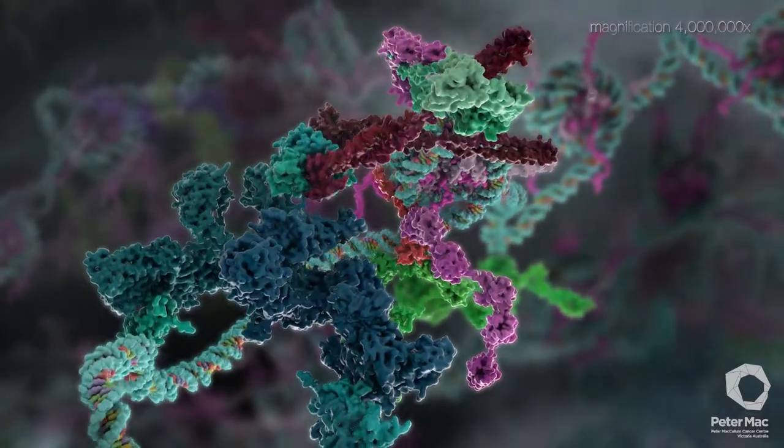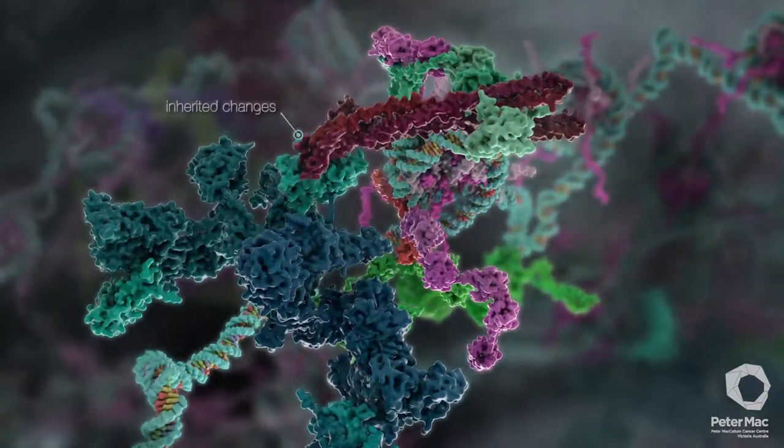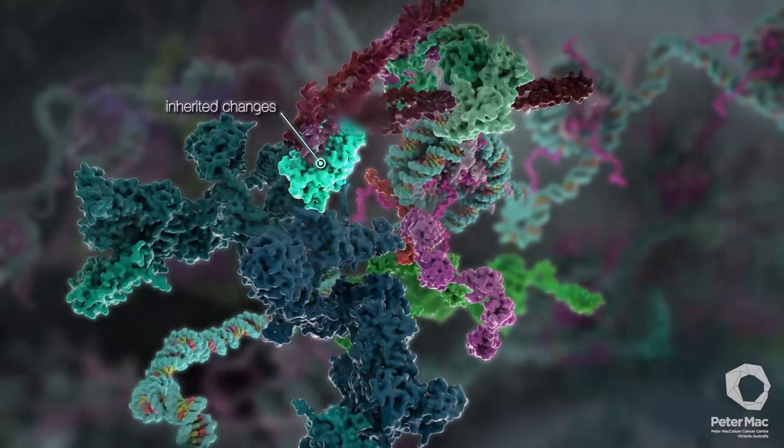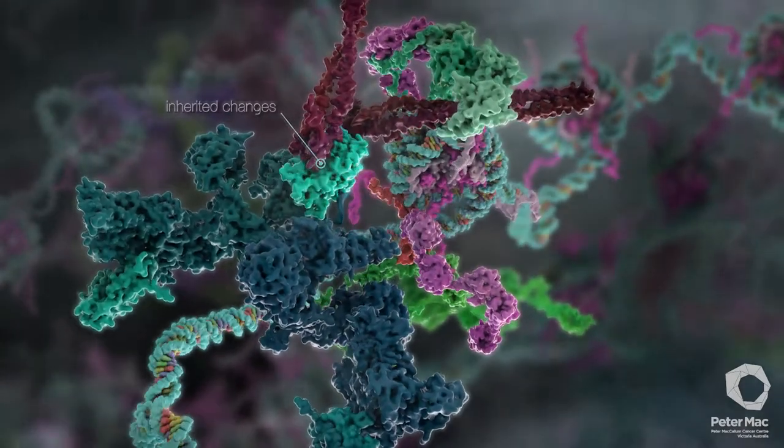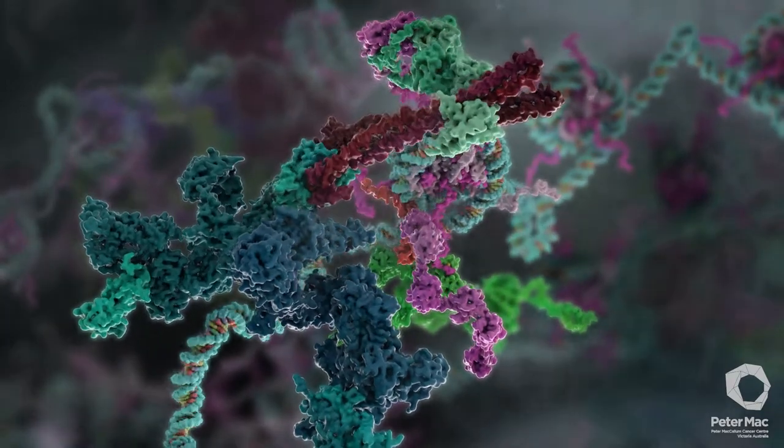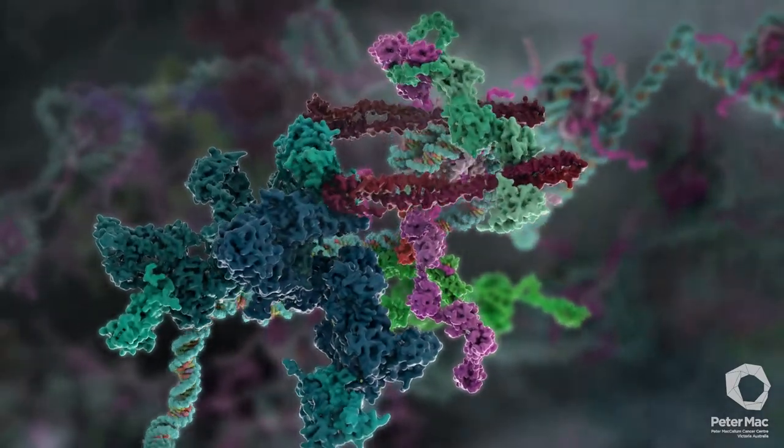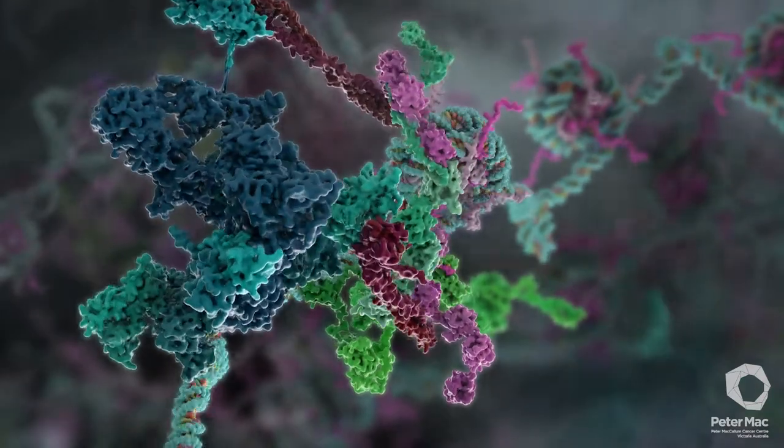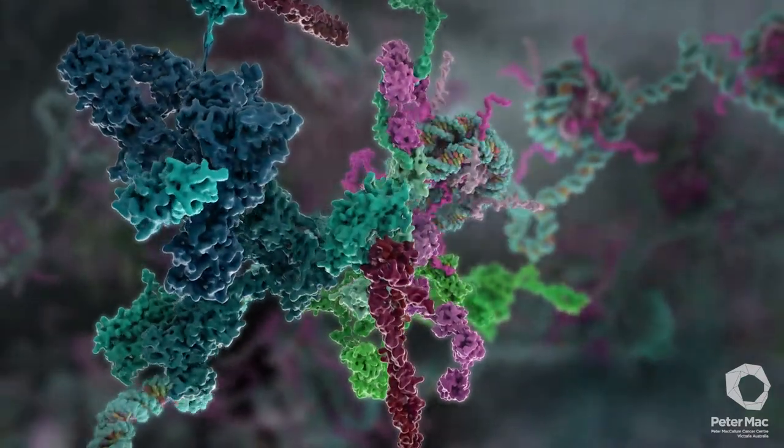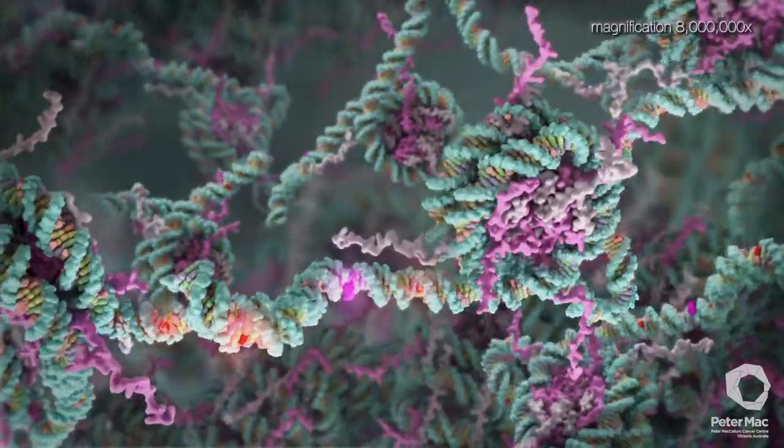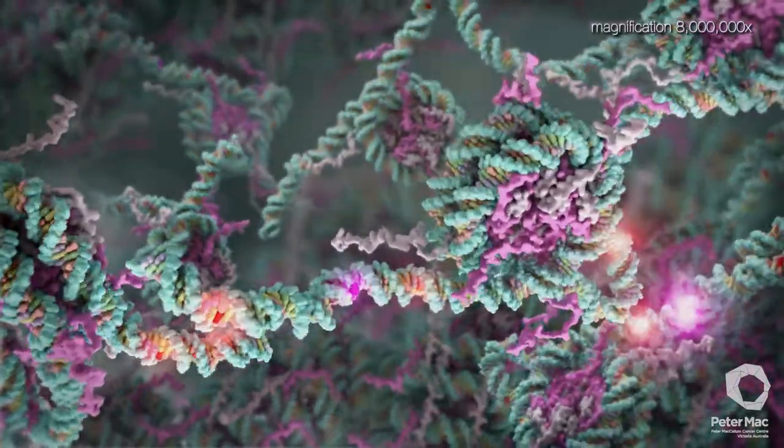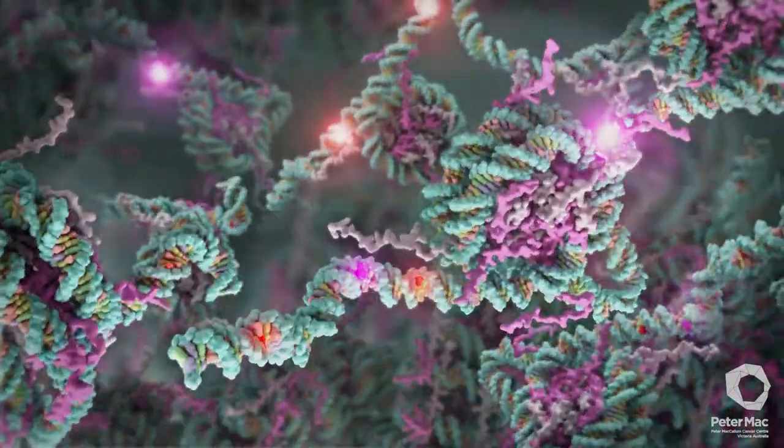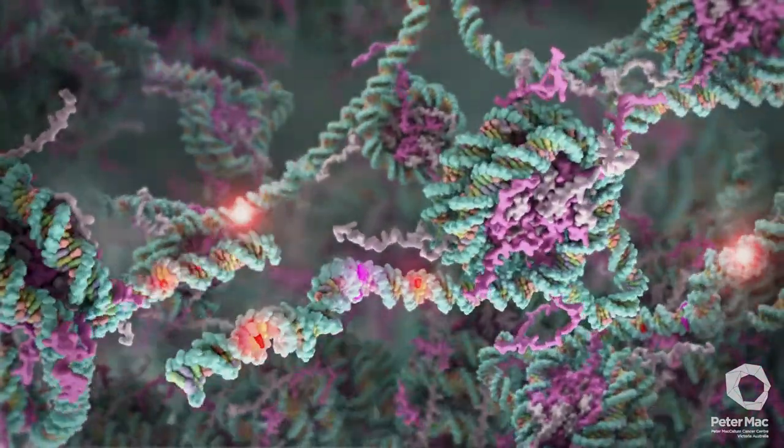Likewise, inherited changes in this area of BRCA1 alter the protein so that it cannot interact with its identical half. The DNA repair process is therefore interrupted. Without functional P53 or BRCA1, over time, cells can accumulate more and more DNA damage.